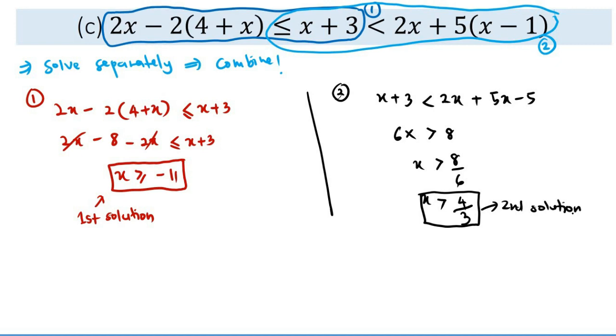We cannot just assume that it's either x greater than or equal to negative 11 as well as x greater than 4 over 3. We should use some combination to actually simulate them. Combine by using number line consisting of negative 11 as the smaller value with 4 over 3 on the right, because it has a bigger value than negative 11.